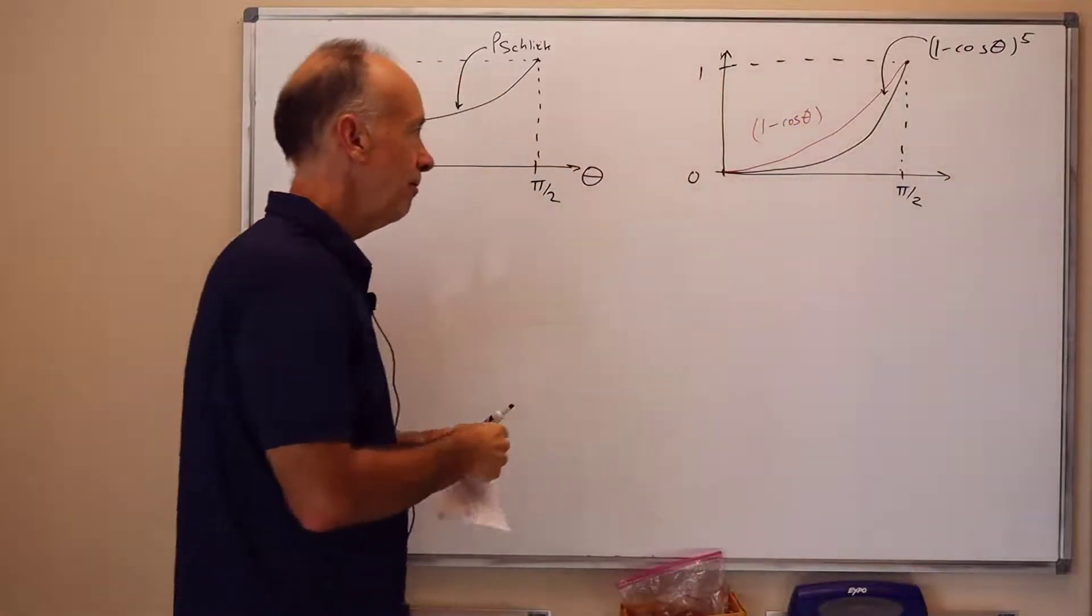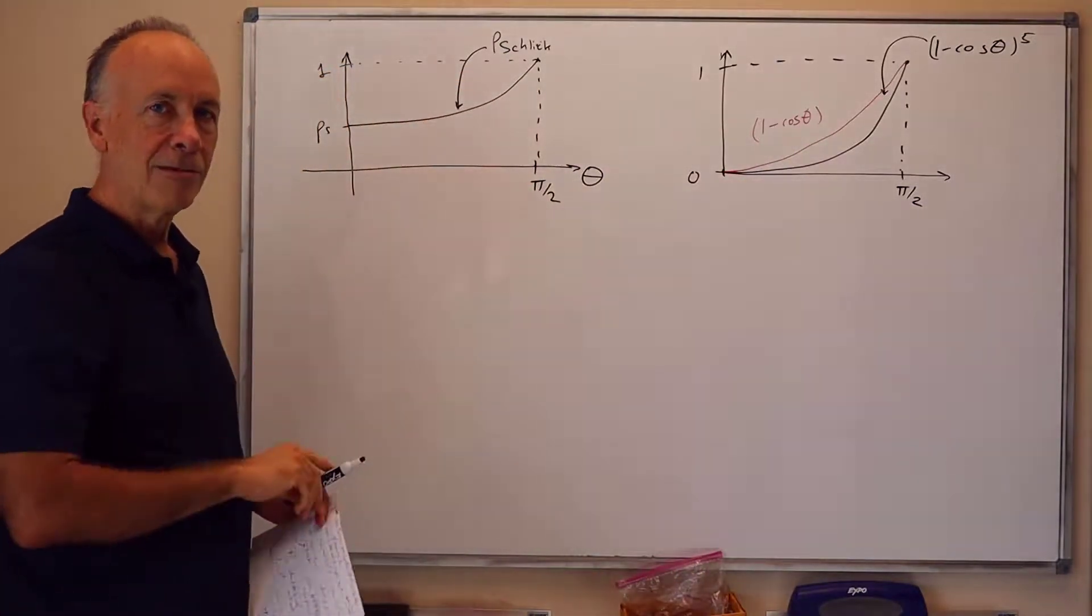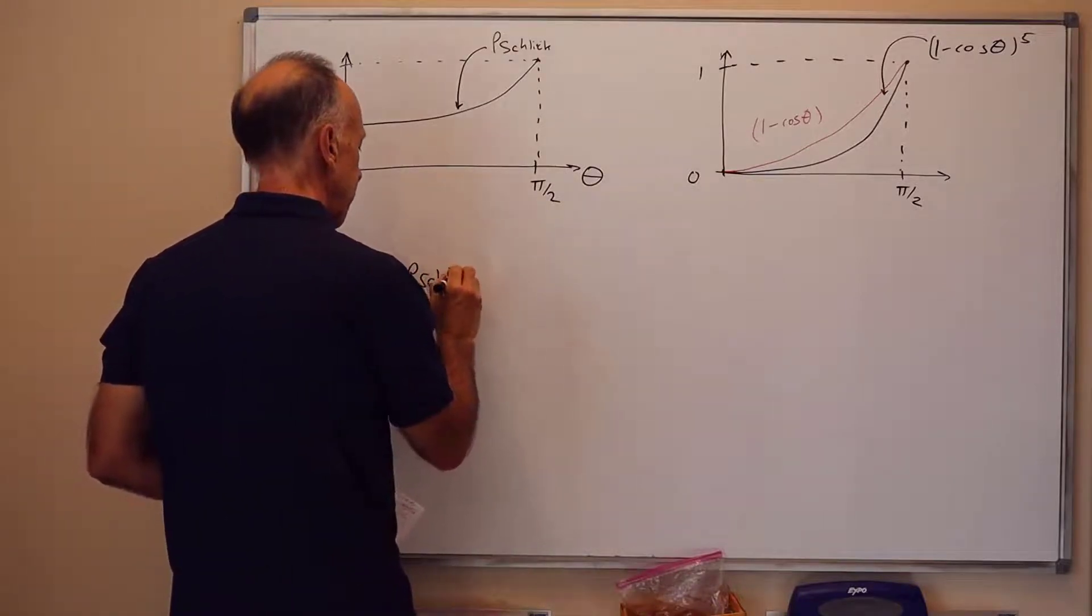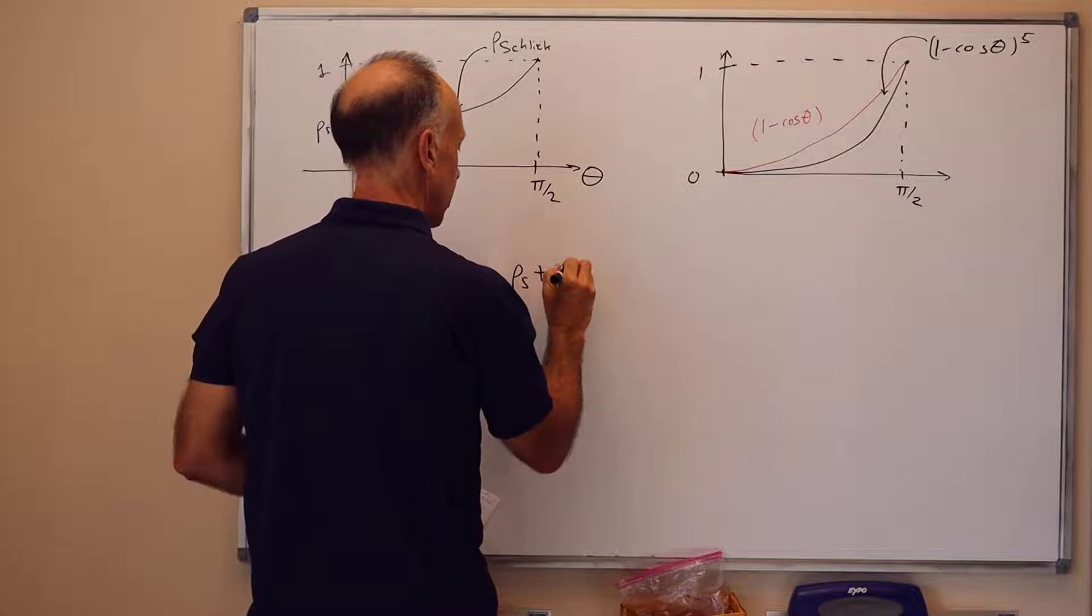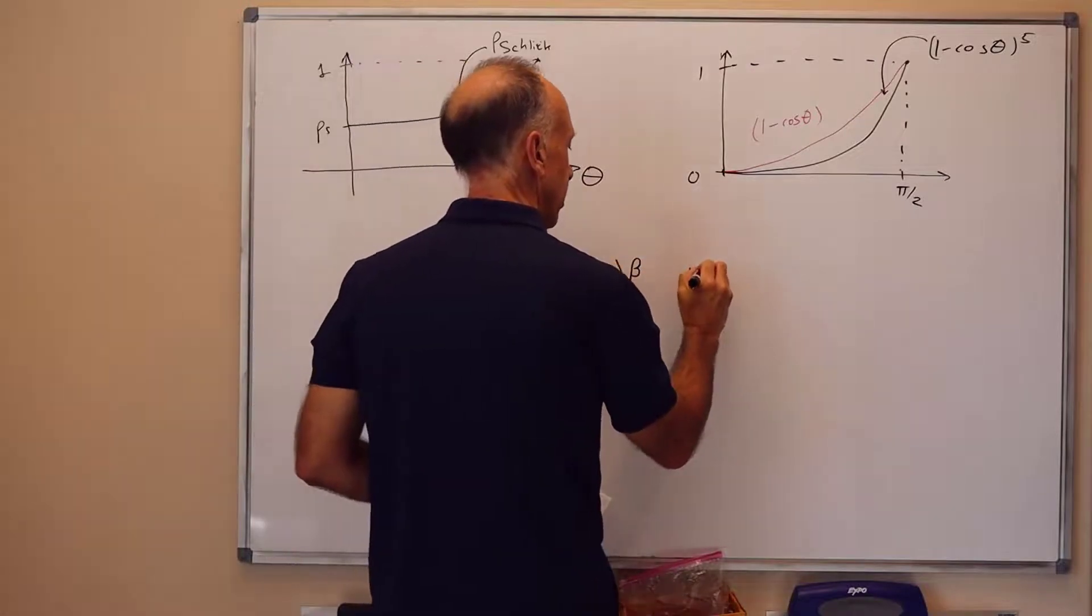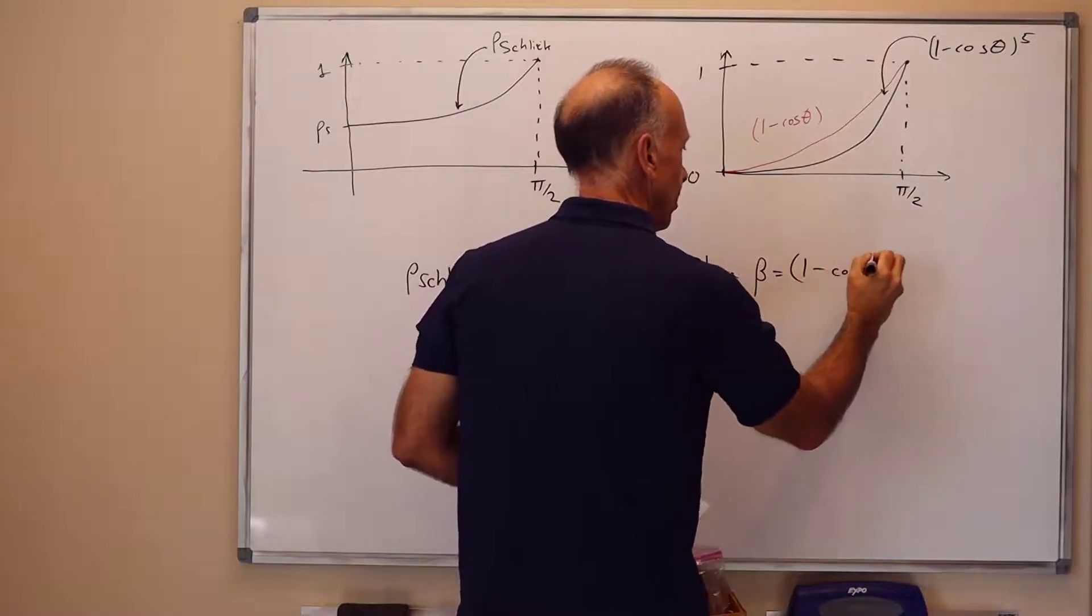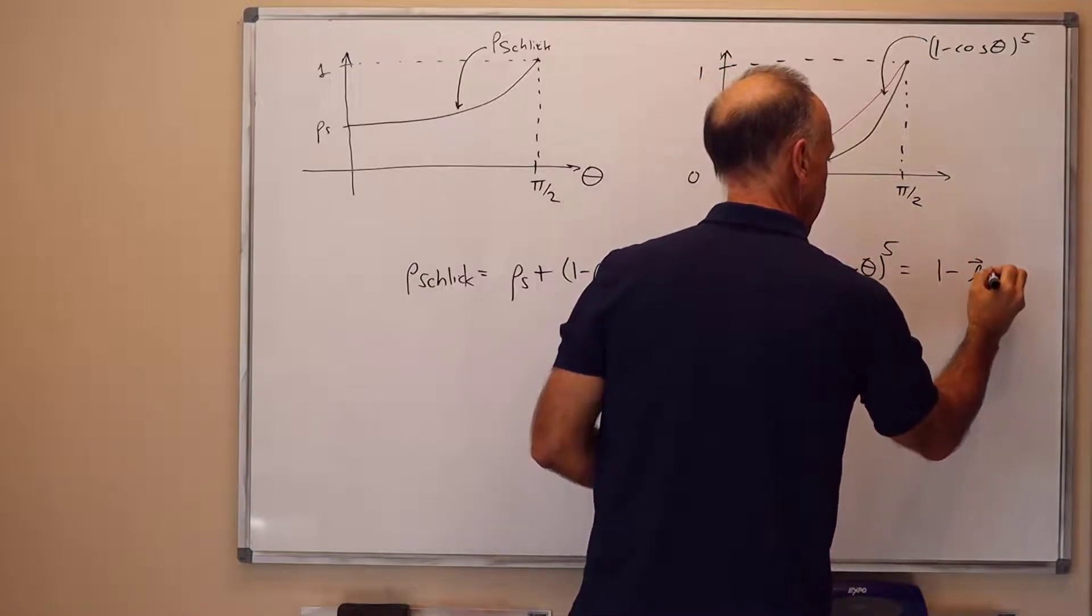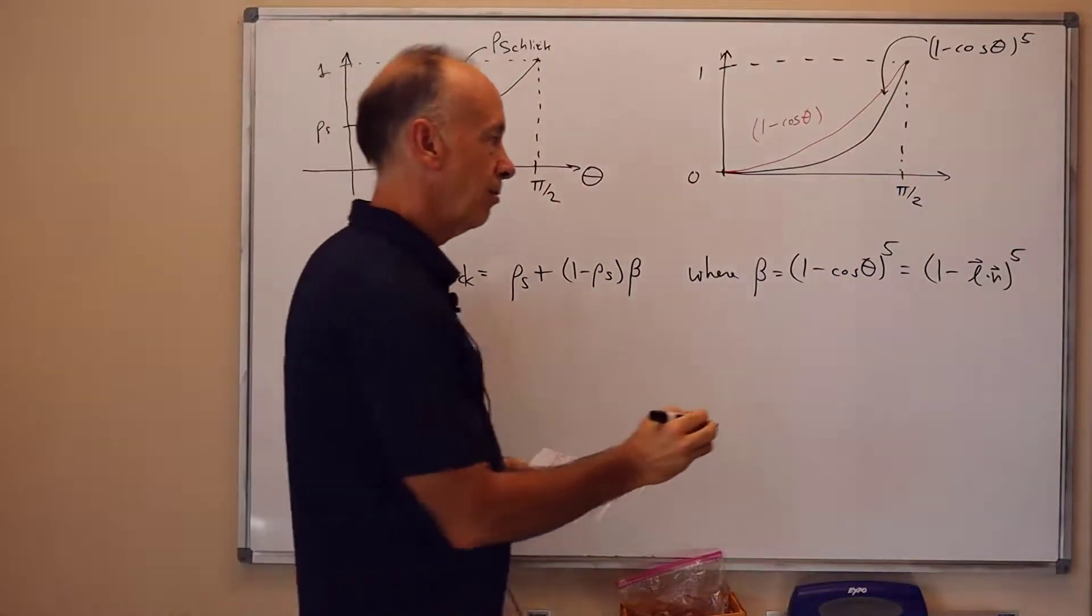whereas, 1 minus cosine of theta would look something more like this. So by raising the power 5, we drop it down closer to 0, so the transition from rho s to 1 will occur for theta fairly close to pi halves. And the formula for Rho-Schlick then can be written as rho s plus 1 minus rho s times beta, where beta equals 1 minus cosine of theta to the 5th power. Which, by the way, is 1 minus L dot n to the 5th power. Because L and n, as shown on the previous board, were unit vectors with angle theta between the two of them.